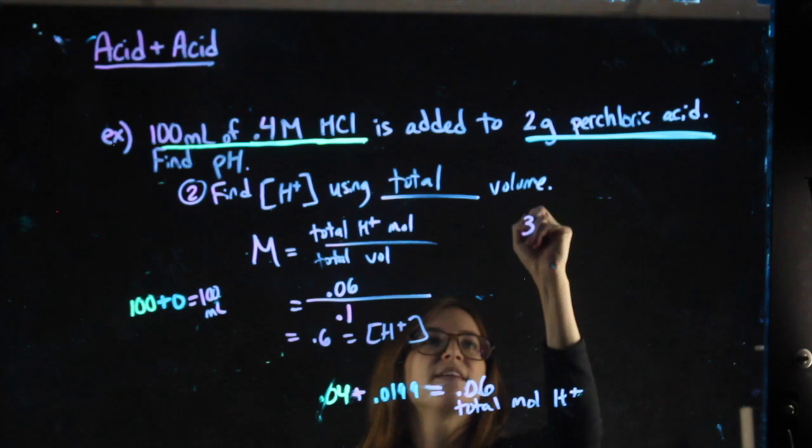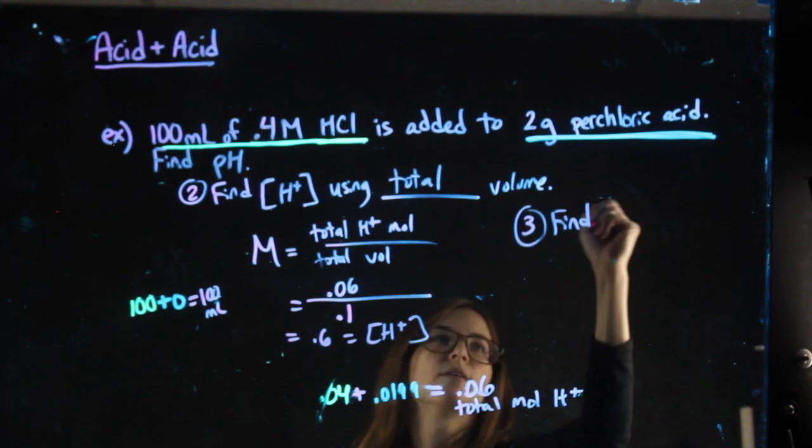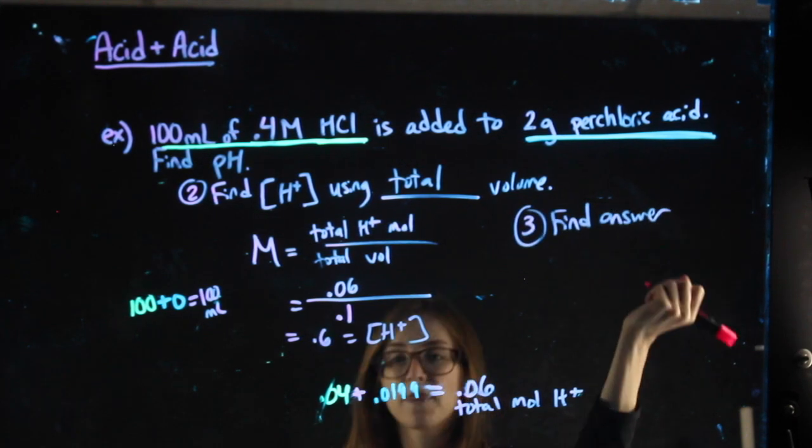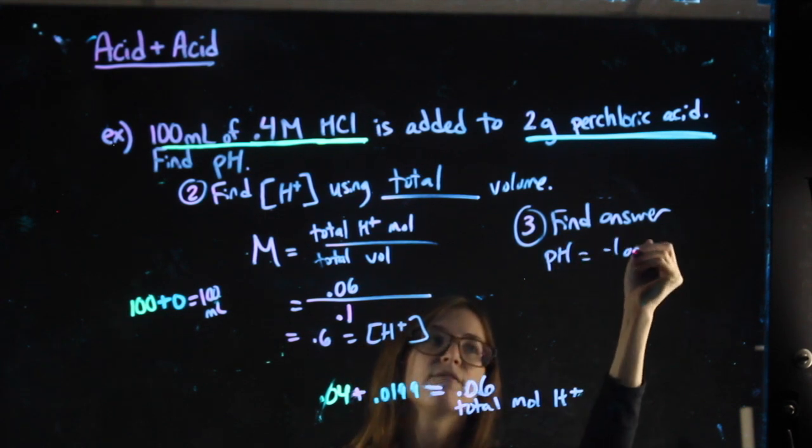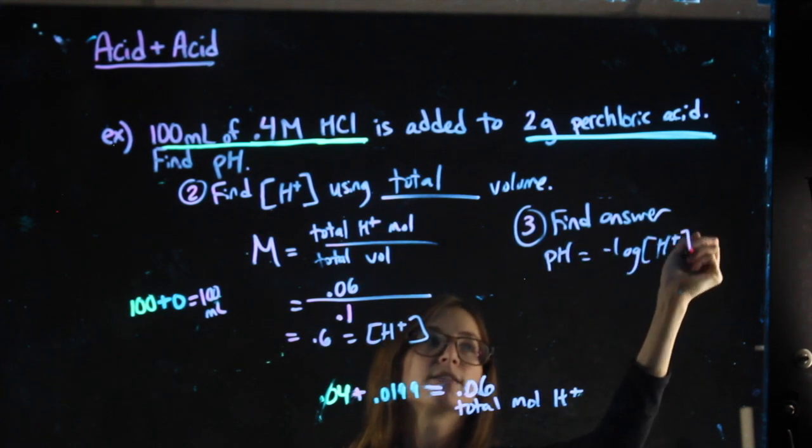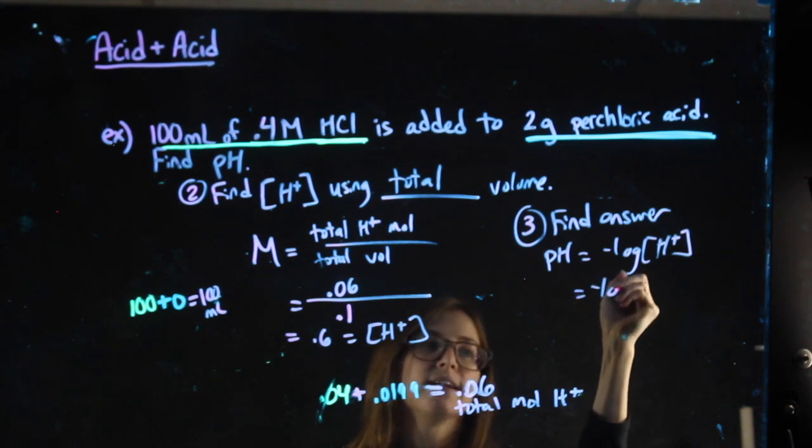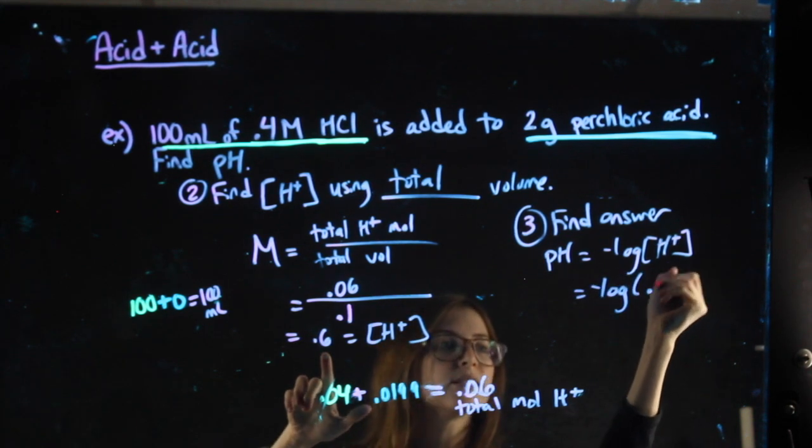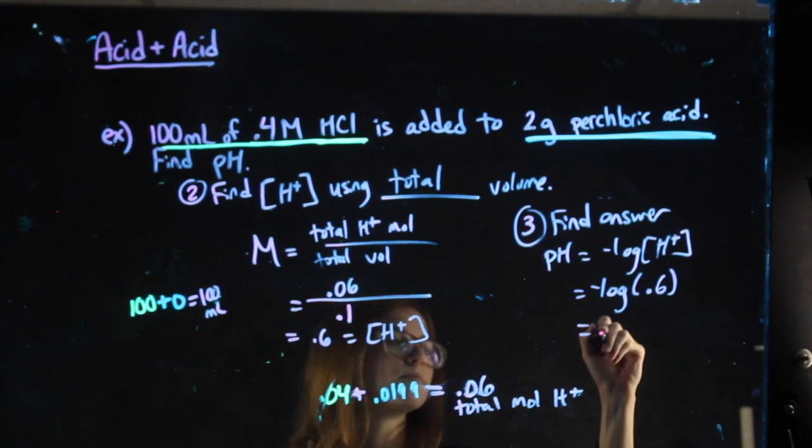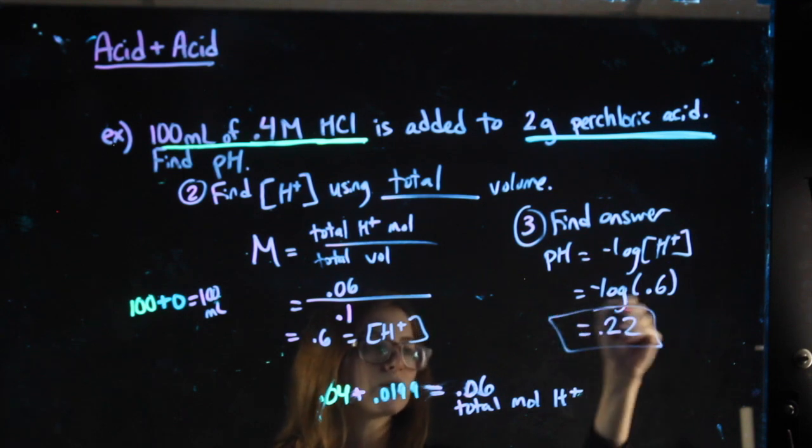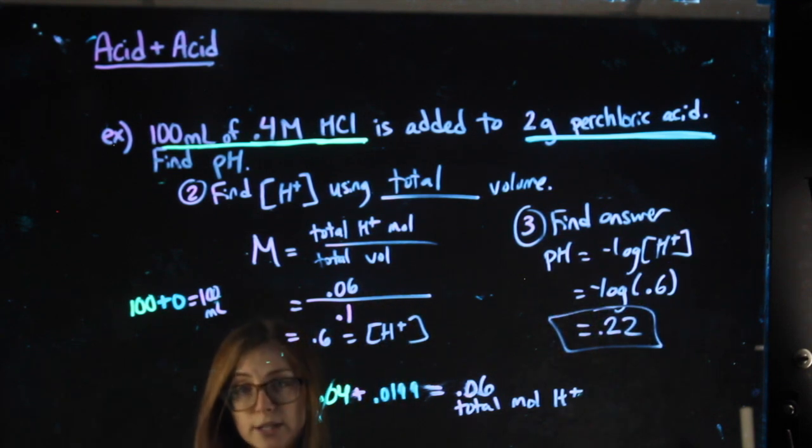Then step three is going to be to find the answer. So in this case, what they want is pH. How do I find pH? By taking the negative log of my H+ molarity. So I'm going to take the negative log of this 0.6, and get 0.22. And that's my answer. So again, total H+ moles over total volume. Try.